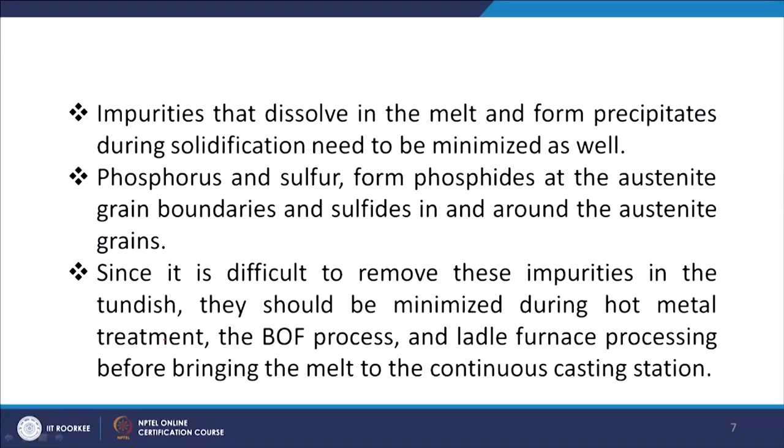Typical impurities include phosphorus and sulfur. Phosphorus forms phosphides at the austenite grain boundaries, while sulfur forms sulfides in and around the austenite grains. These compounds challenge the formability of the steel. It is difficult to remove these impurities in the tundish itself; they must be minimized during hot metal treatment, the BOF process, and ladle furnace processing.